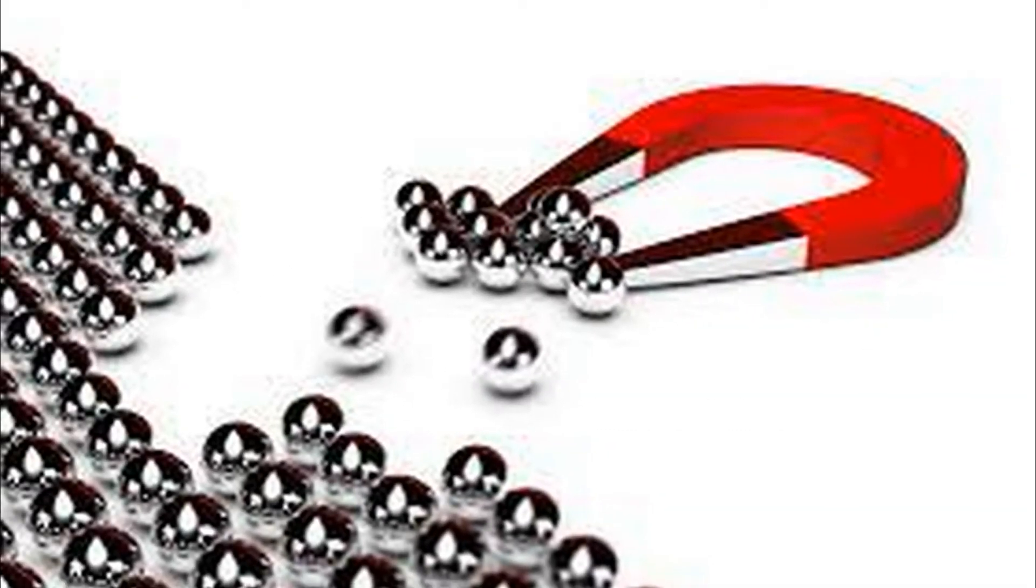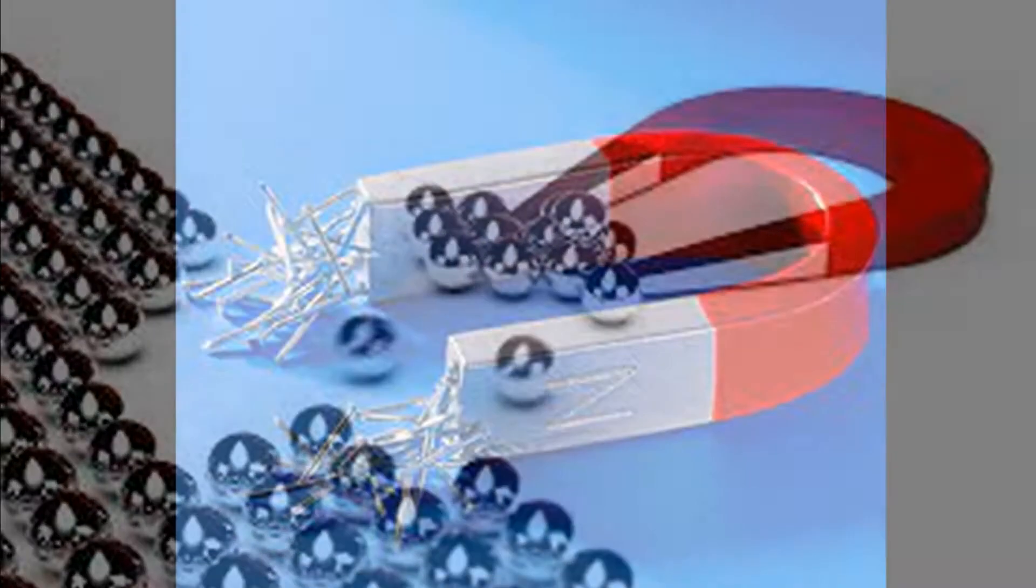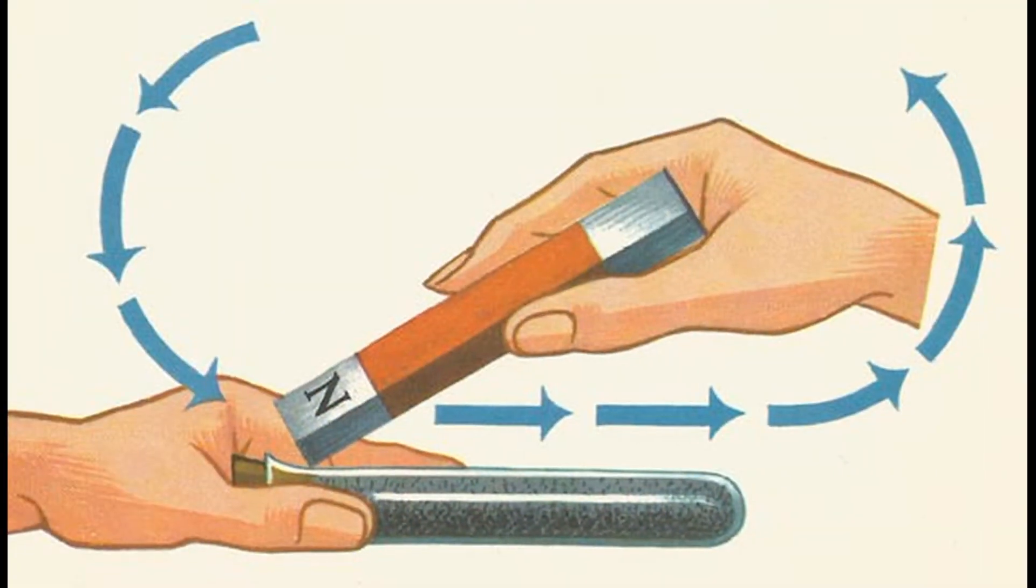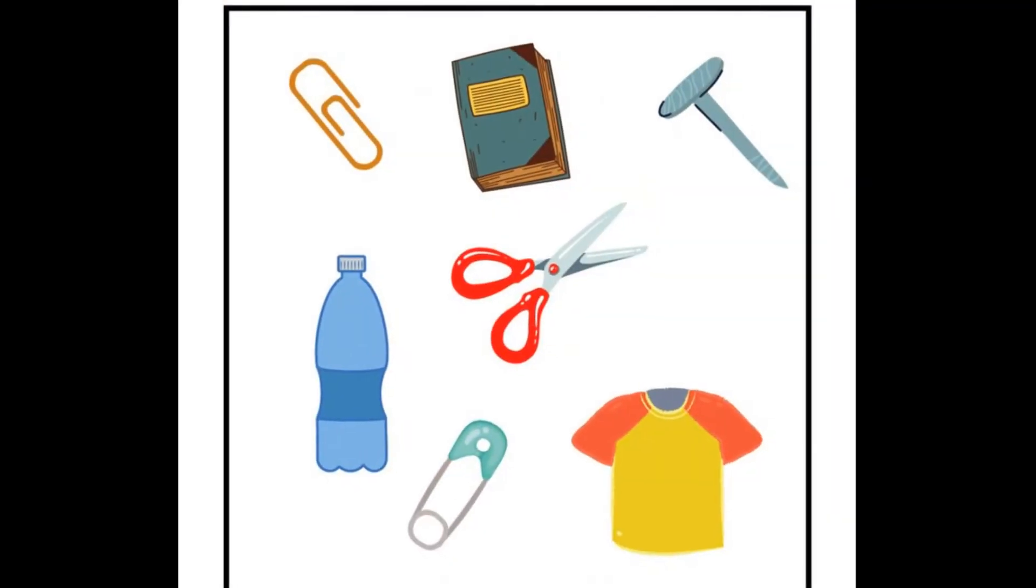You will observe that articles made of iron and steel are attracted towards the magnet. A knife blade made of stainless steel is not attracted by the magnet. Articles made of paper, plastic, glass etc. are not attracted by the magnet.